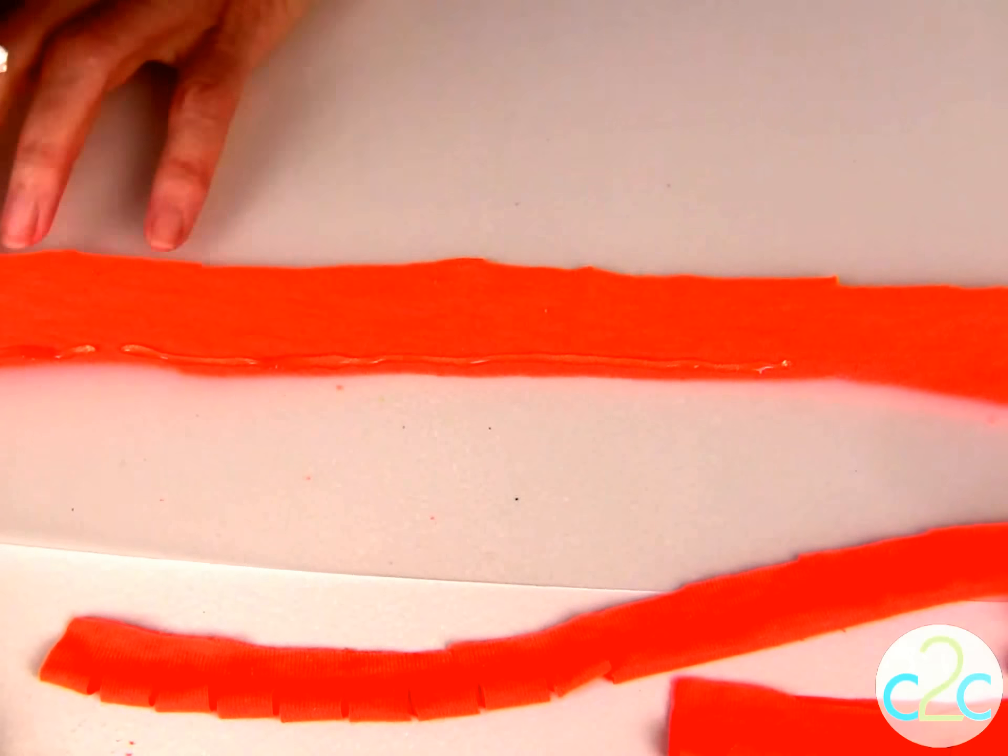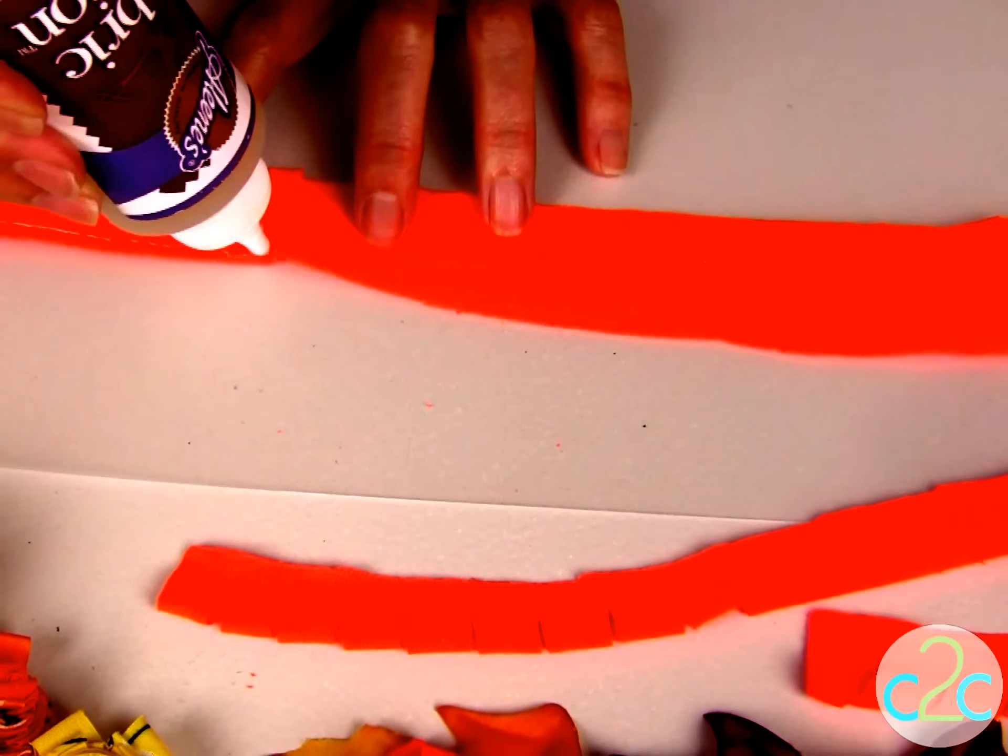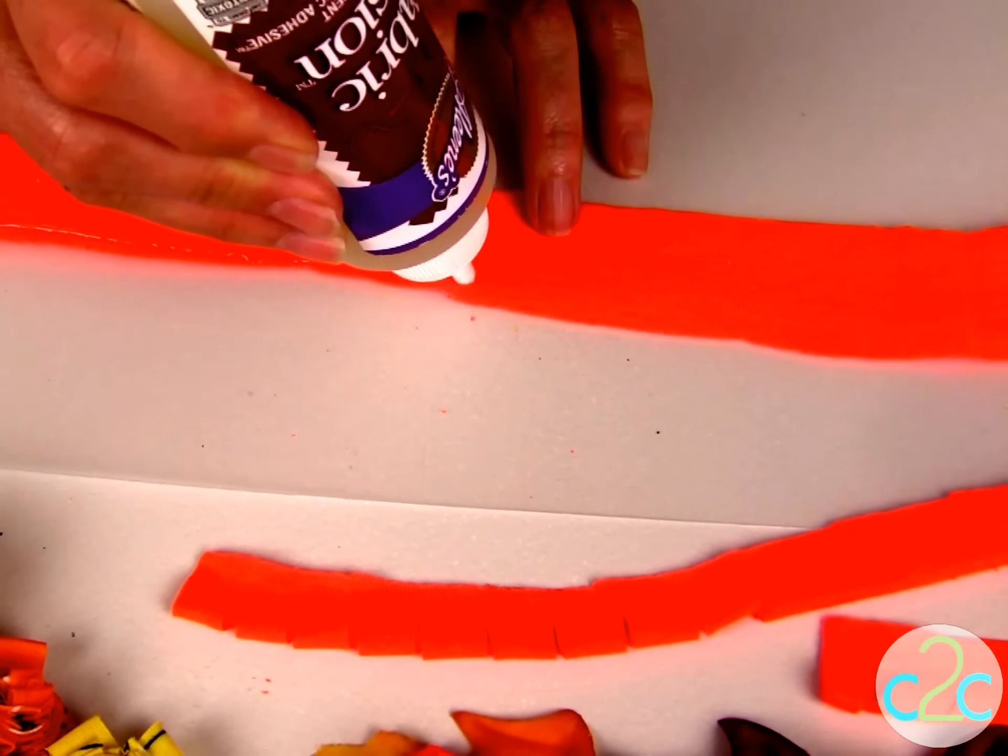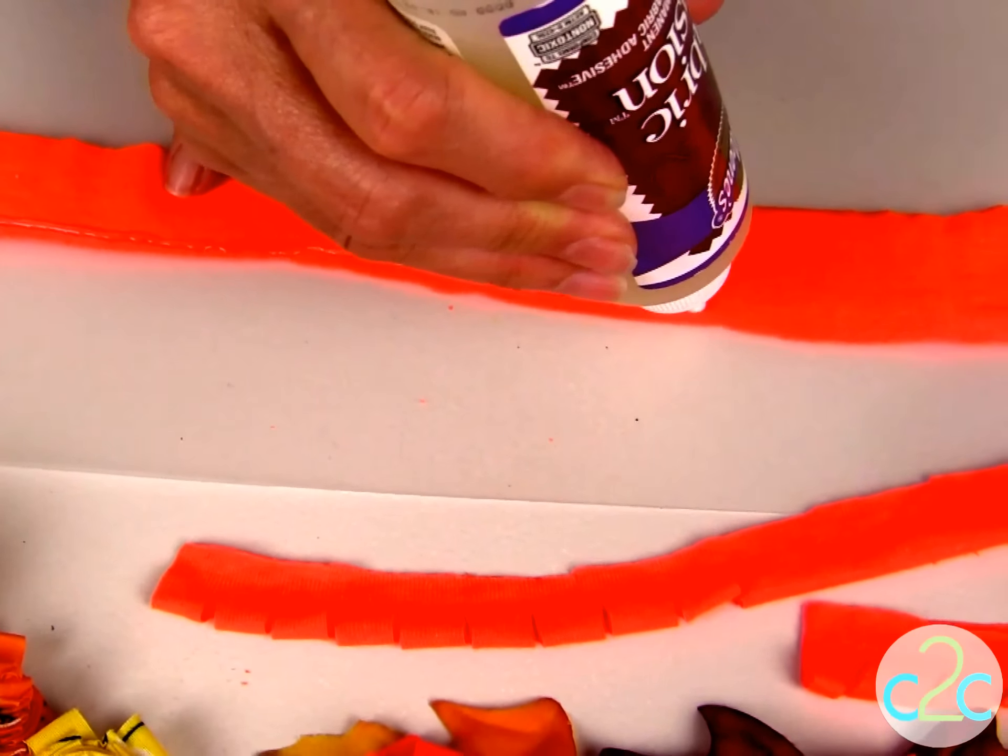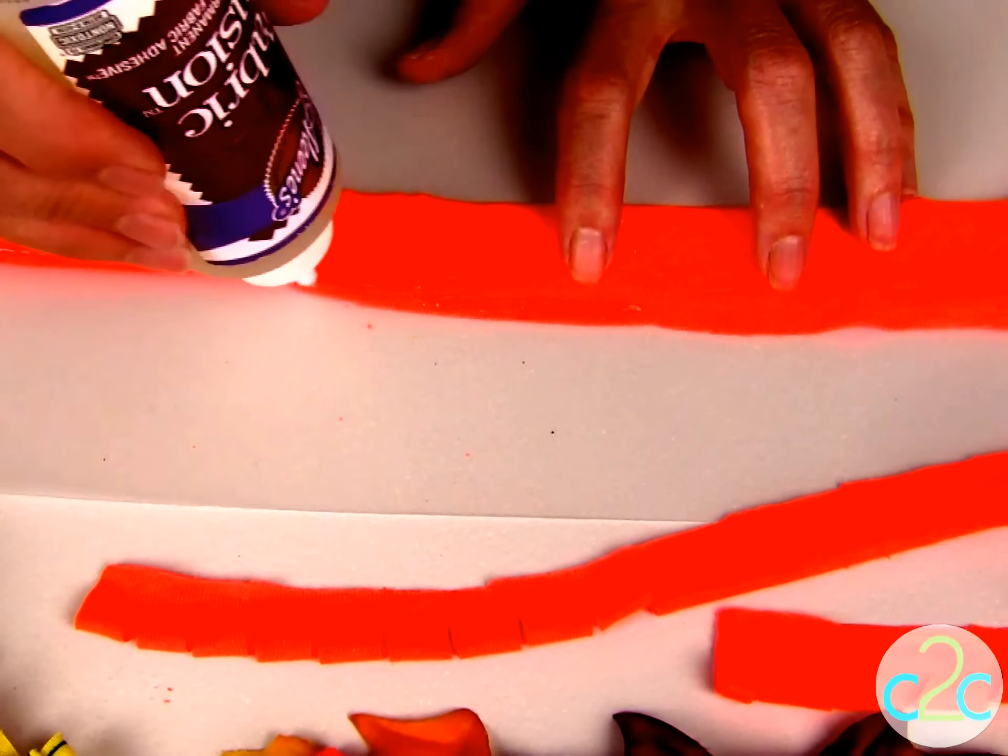So I'm squeezing a line of Aleene's Fabric Fusion Glue right along the edge, and you can see that I did not cut this piece exact. You don't have to be precise with this. Come back and just draw your glue line if you miss any spots.